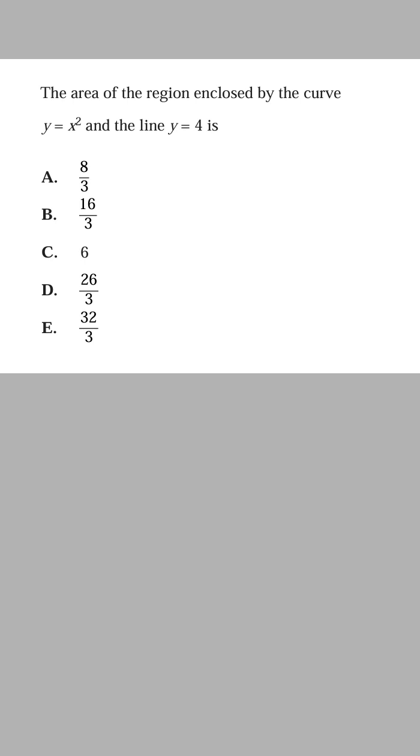Why does 61% of the Maths Methods students get this exam question wrong? We've got the area of the region enclosed by the curve Y equals X squared and the line Y is equal to 4.